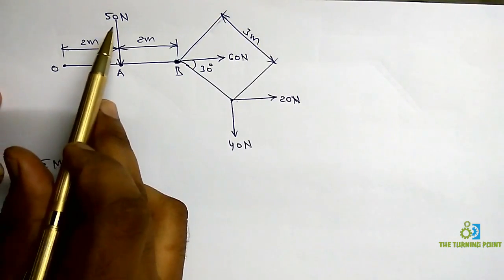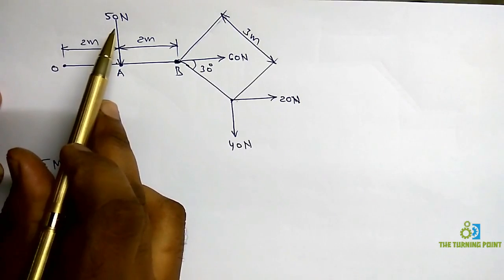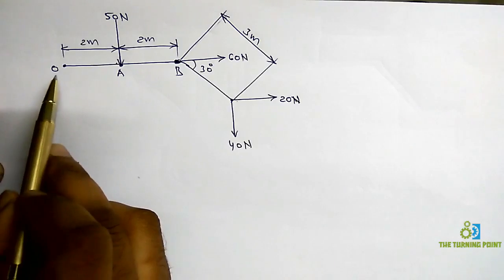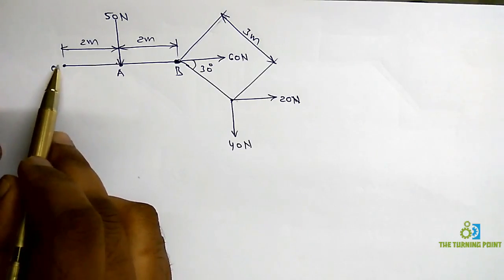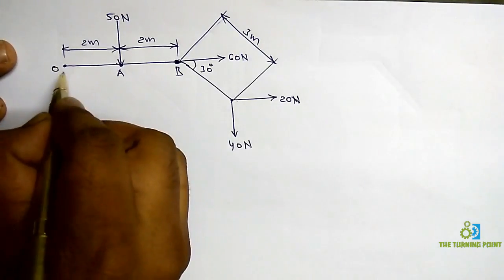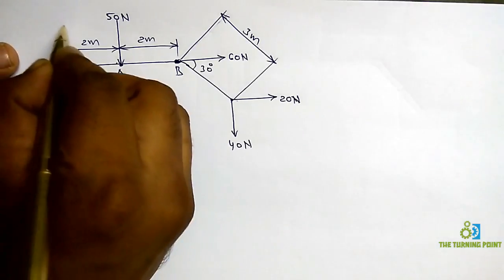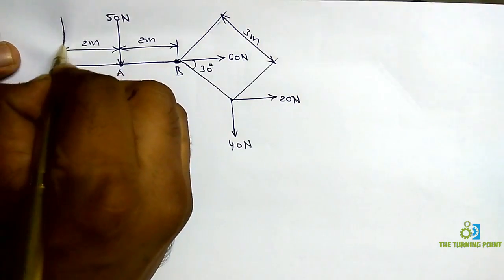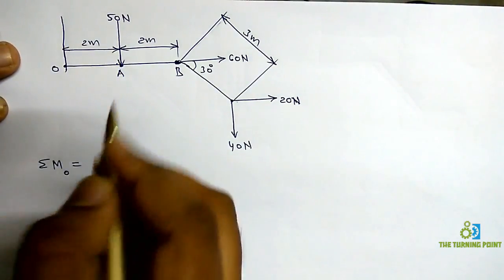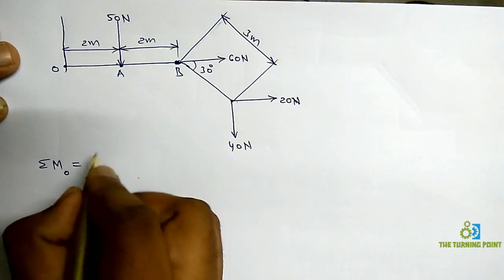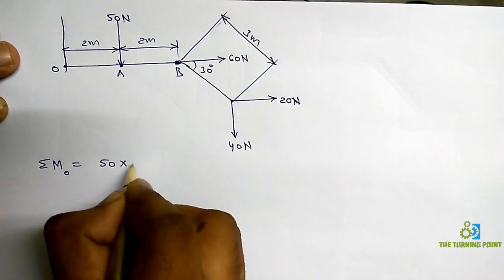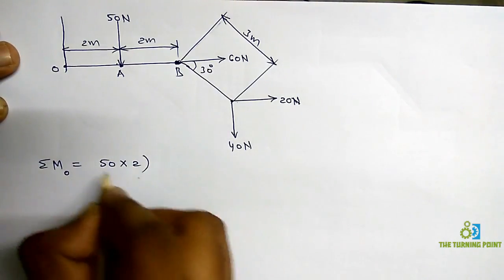The first force is 50 N. 50 into perpendicular distance up to the moment center. To find the perpendicular distance, draw a line passing through this point parallel to the force. So the perpendicular distance is 2 meters.